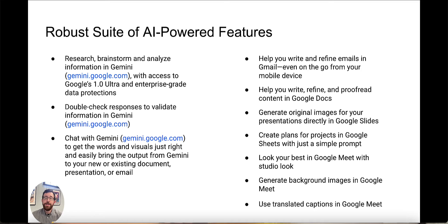In addition, we have the integrated components of Gemini AI: the Help Me Write feature in Gmail and Google Docs for proofreading and refining, creating and generating original images and slides, creating plans for projects within Google Sheets, and a couple of Meet features including visual adjustments to look your best, generating background images on the fly, and translated captions.